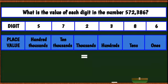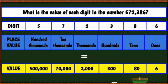Now let's find the value of each digit. Six's value is 6. Eight's value is 80. Three is in the hundreds place, so its value is 300. Two is in the thousands place, so its value is 2,000. Seven is in the ten thousands place, so its value is 70,000. Five is in the hundred thousands place, so its value is 500,000.